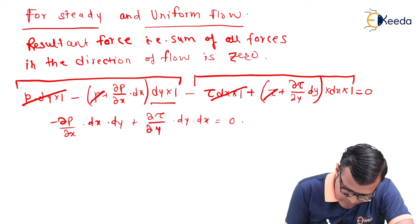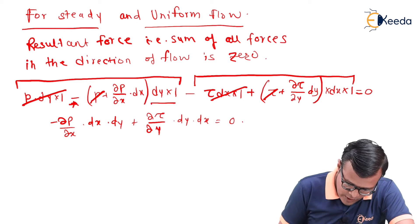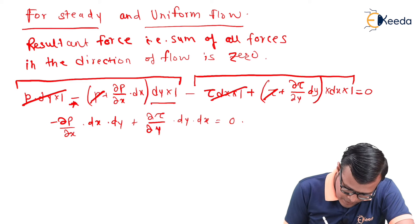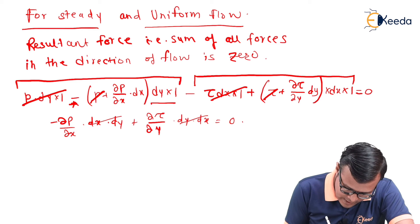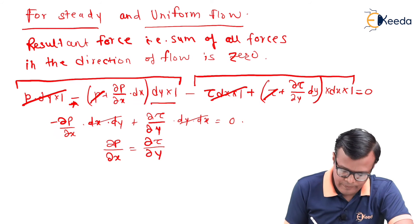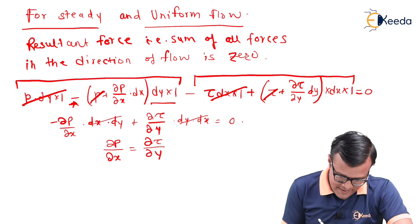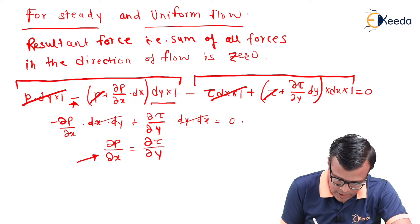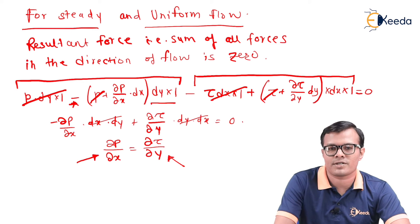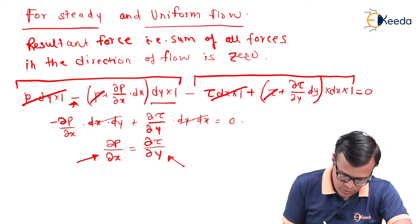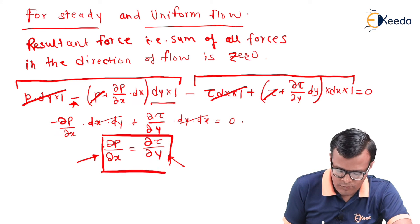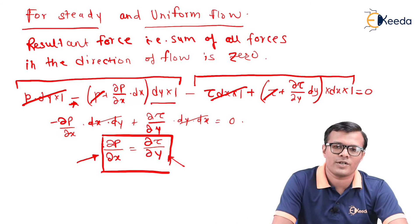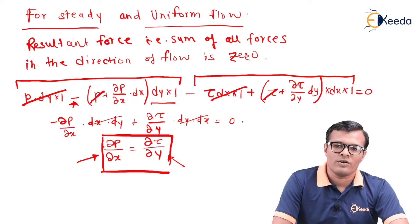Taking the negative term to the opposite side and cancelling dx·dy from both sides, we directly obtain the result: ∂P/∂x = ∂τ/∂y. This means the rate of change of pressure with respect to horizontal distance is equal to the rate of change of shear stress with respect to vertical distance. This is a very important relation that will be helpful for further analysis of velocity and stress distributions in upcoming videos.